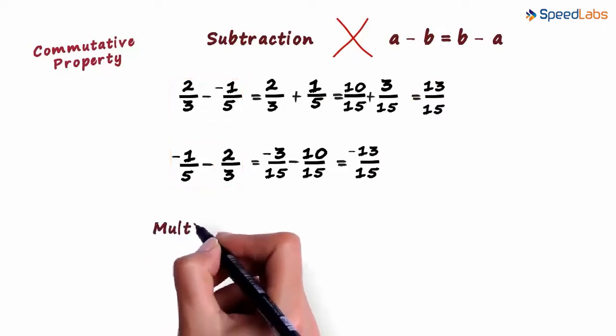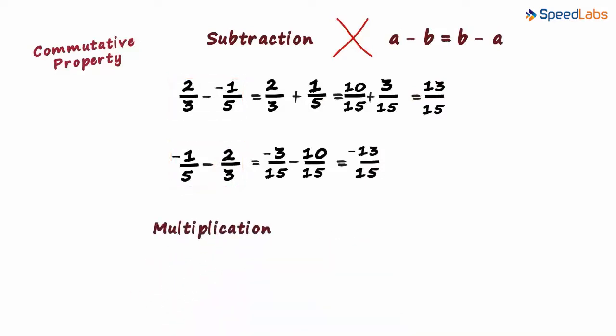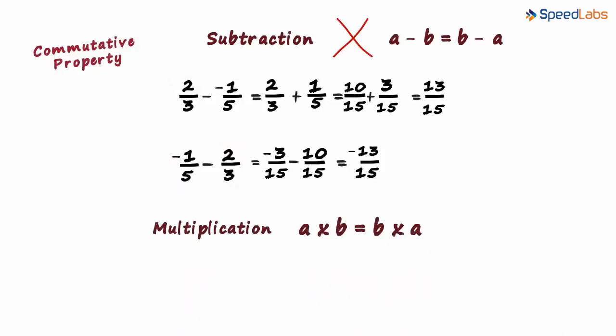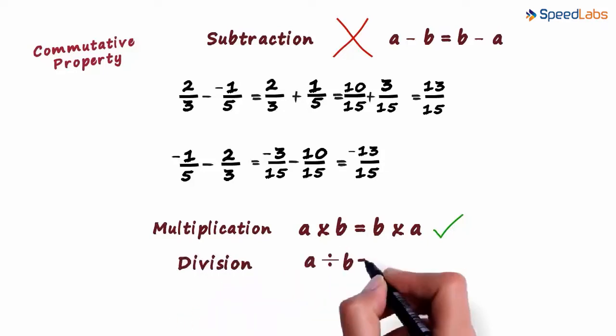For multiplication, we have to find out if a multiplied by b equals b multiplied by a. Yes, the commutative property is always satisfied for multiplication of rational numbers. And to test it for division, we need to check if a divided by b is equal to b divided by a. If you try this for two different rational numbers, you will notice that the commutative property is not satisfied for division.